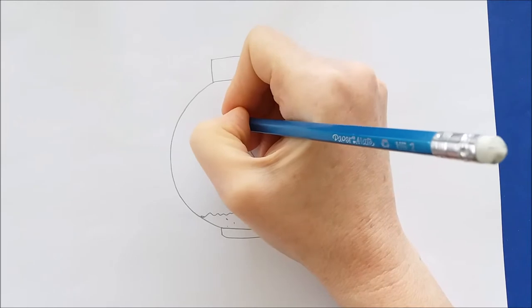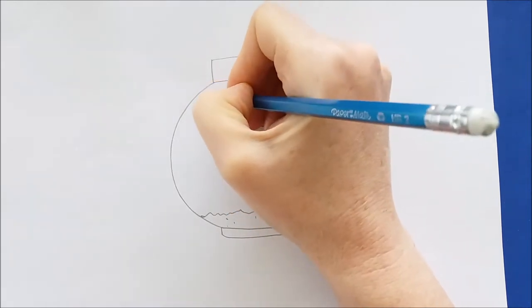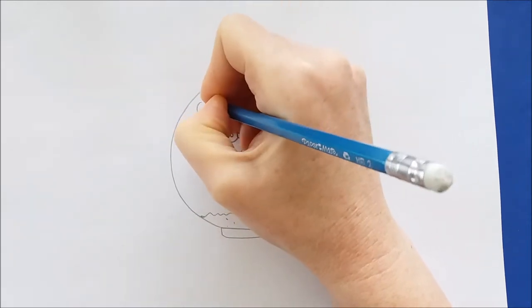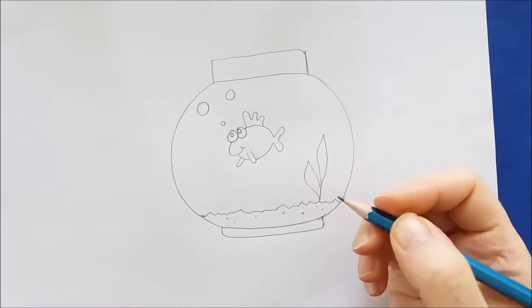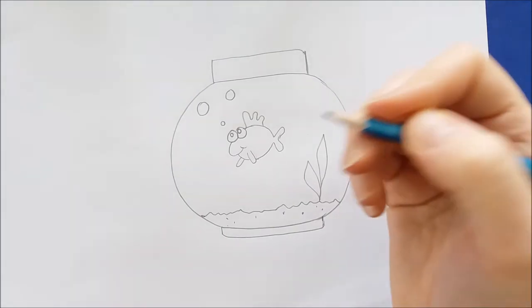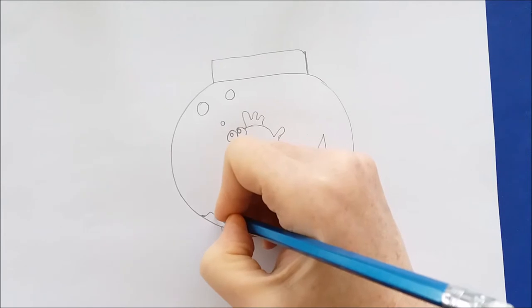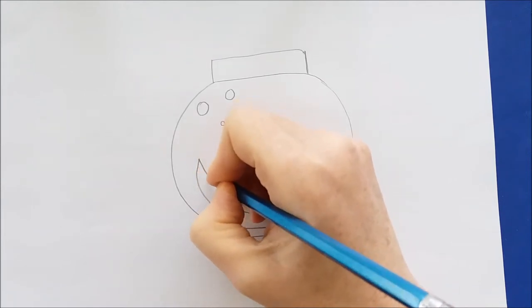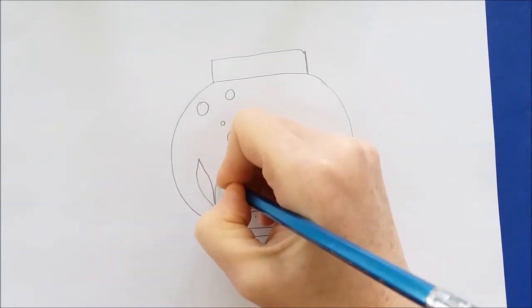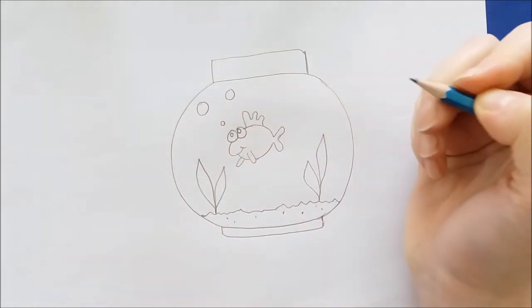And then I'm going to draw some bubbles up here because he's making bubbles in the water. And they're just circles. And then finally I'm going to go ahead and draw that last sea plant which is another kind of oval shape. And it has two leaves just like that.